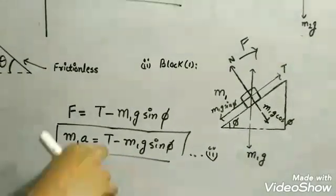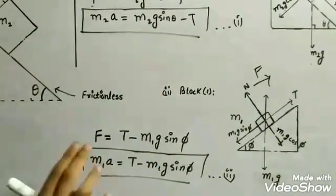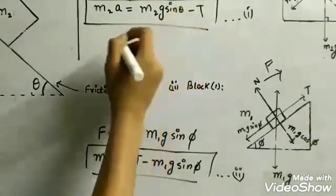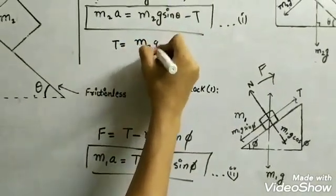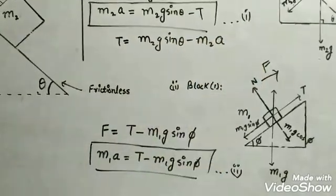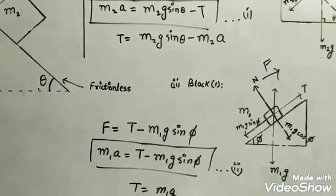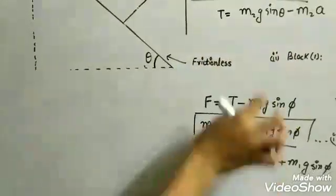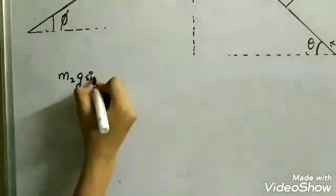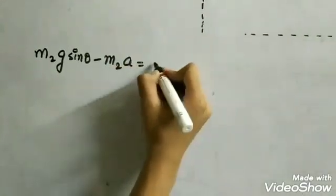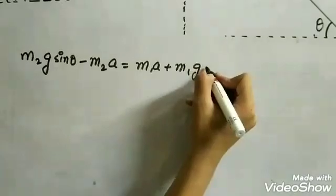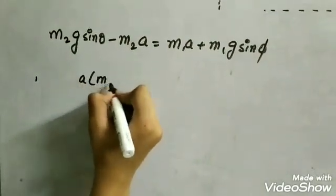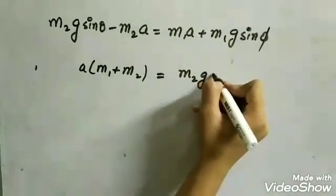We now solve these two equations to find the unknowns. We first eliminate T. From the first equation we get T = m2g sin theta minus m2a, and from the second equation we get T = m1a plus m1g sin phi. Equating these two expressions: m2g sin theta minus m2a = m1a plus m1g sin phi.